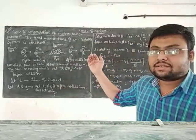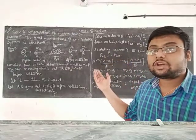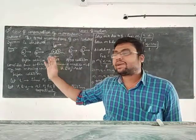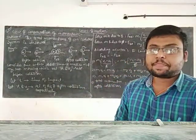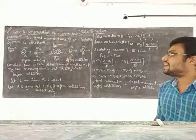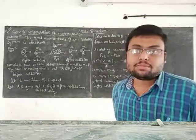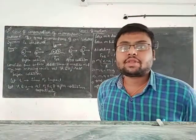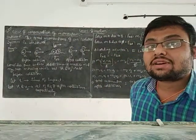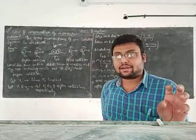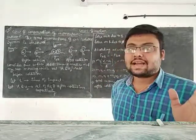You have to write the statement and then write the proof. The statement says: the total momentum of an isolated system is conserved. Conserved means remains constant — so the total momentum of an isolated system remains constant.